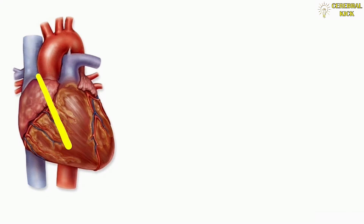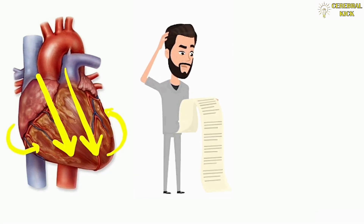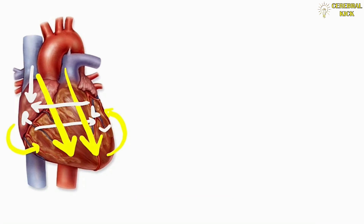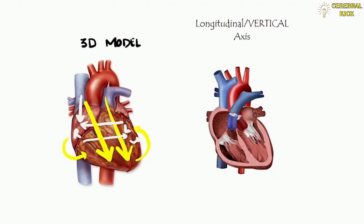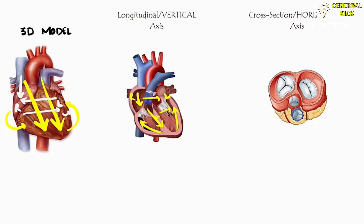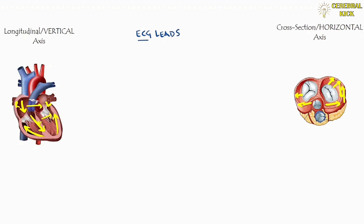The currents moving through the heart are never unidirectional — they must be understood in a 3D model where currents move upwards, downwards, sideways, right to left, left to right, anterior to posterior, and from inner wall to outer walls. This requires seeing these currents from all angles, which we do with the ECG. If we cut the heart vertically and see the frontal plane, the current moves upward-downward and right-to-left. If we cut horizontally, we see currents moving sideways or anterior to posterior. In a 12-lead ECG system, the frontal axis is interpreted through 6 limb leads and the cross-sectional axis through 6 chest leads — hence the 12-lead ECG.